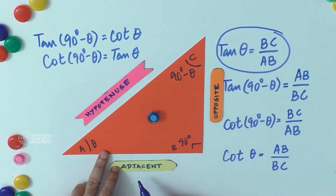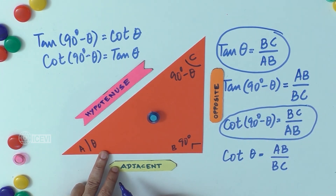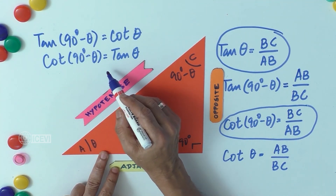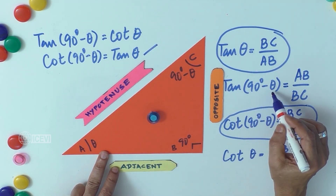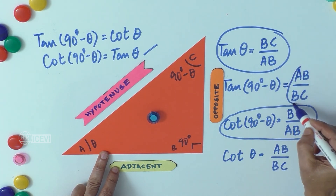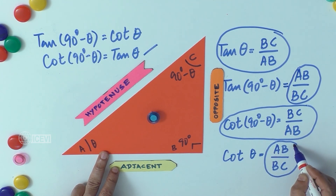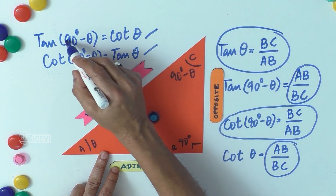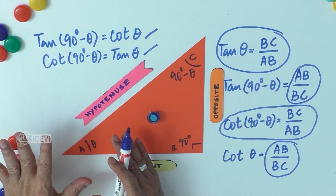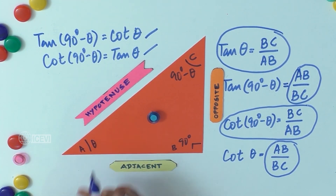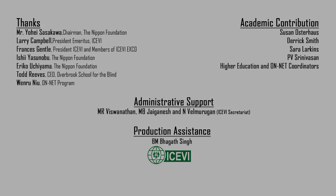Now let us see the values. tan θ = BC/AB, which equals cot(90° − θ) = BC/AB — so we have proved cot(90° − θ) = tan θ. And tan(90° − θ) = AB/BC = cot θ = AB/BC — so we have proved tan(90° − θ) = cot θ.